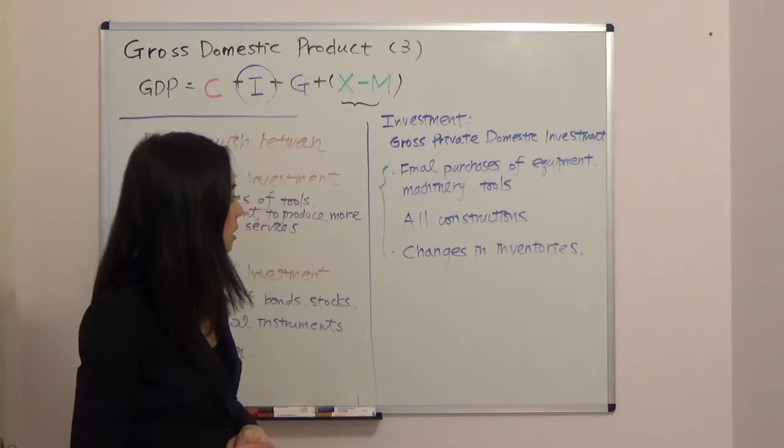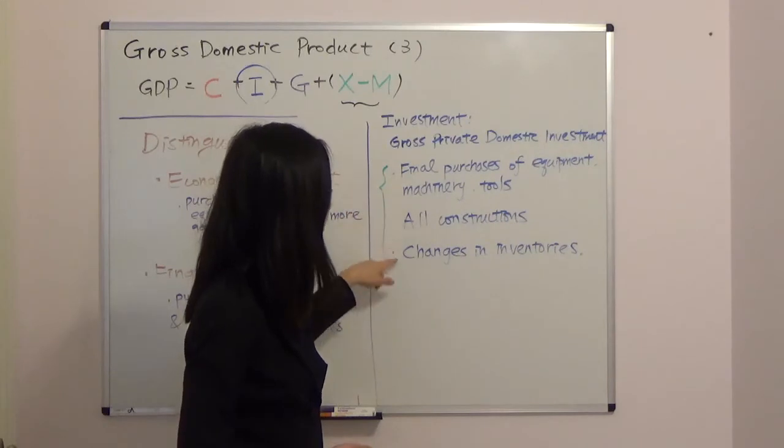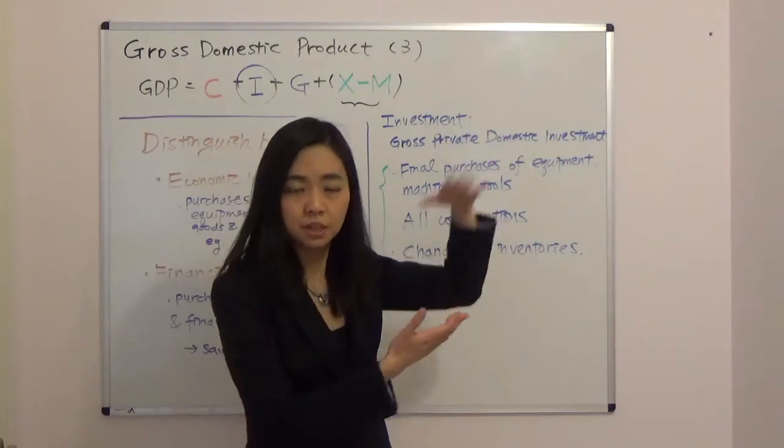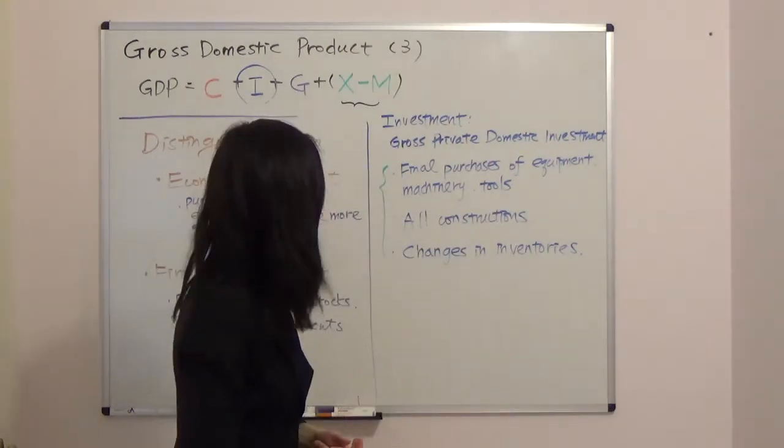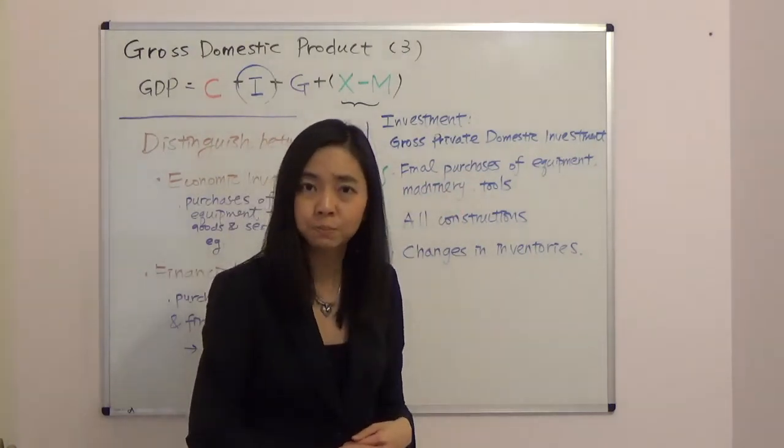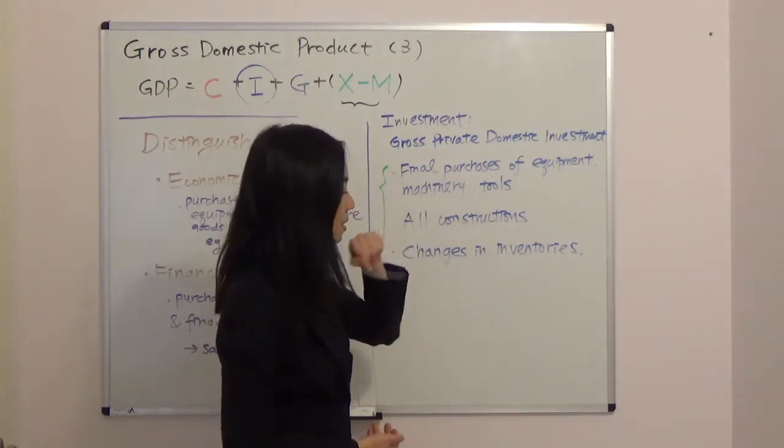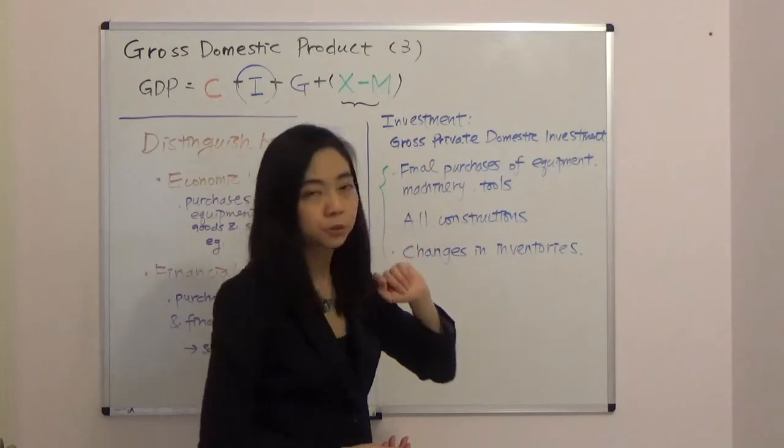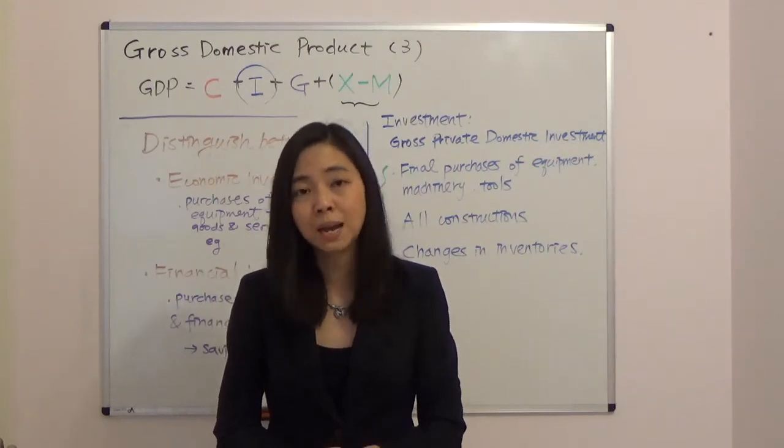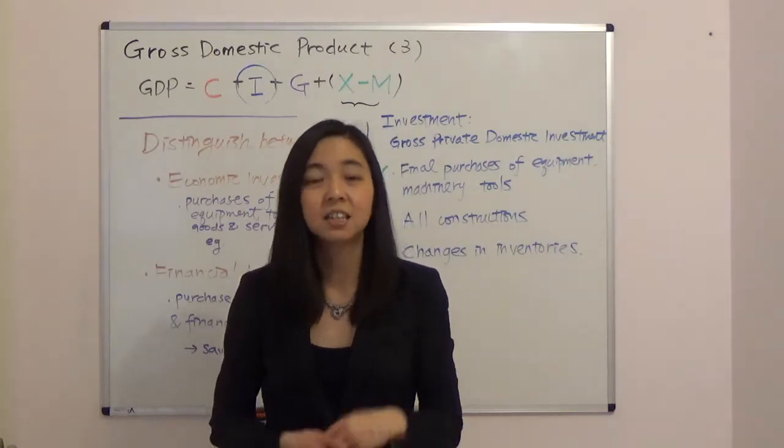So you will ask, why is it important for me to know the difference between the three components? Here's a reason. So if your investment goes up, is it a good sign for the economy? Well, that depends on whether your investment goes up because firms are purchasing more equipment, tools and machinery, or because firms simply got more inventories. Well, if it's the first one, firms are purchasing more equipment and machinery, then that's a good sign because firms are expecting consumers to buy more. And as a result, they invest more in order to produce more goods and services. So that would be a good sign.